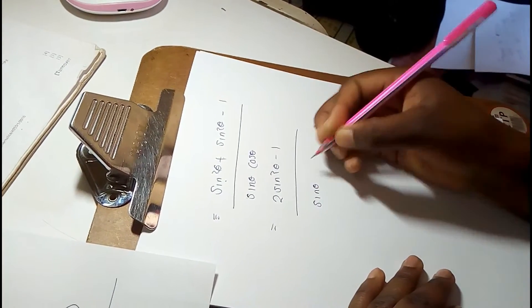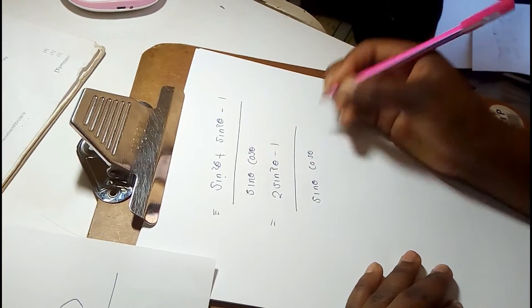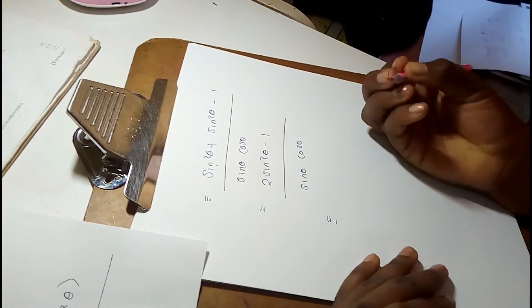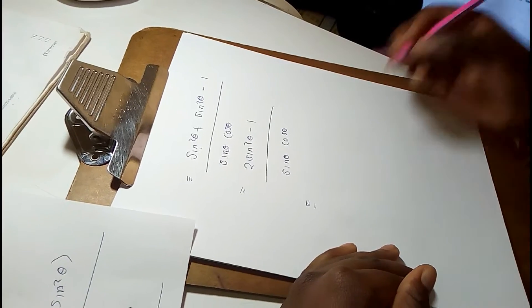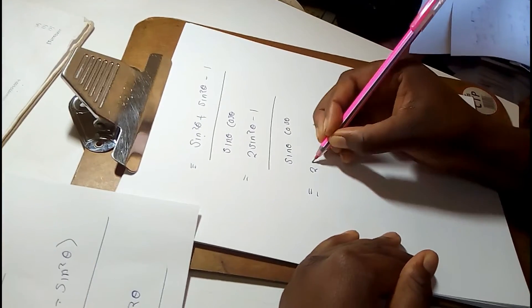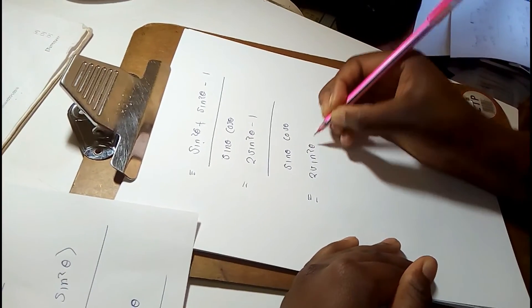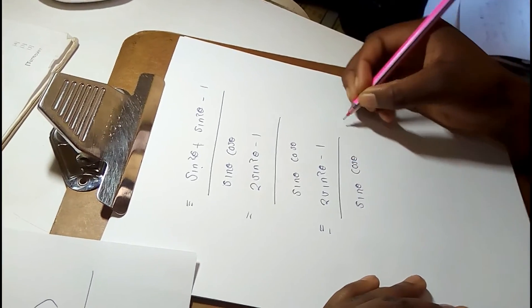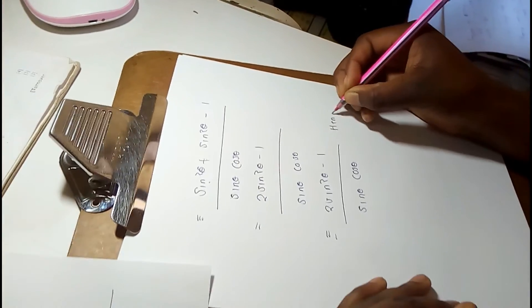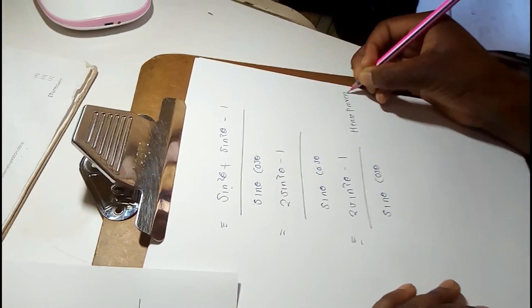As you can see, this is the same as the left-hand side of the identity given in the question. After solving this, I've proved the identity. I'll write 'Hence Proven' to complete the answer. Great job answering this examination question. My name is Personal Education — see you in the next video.